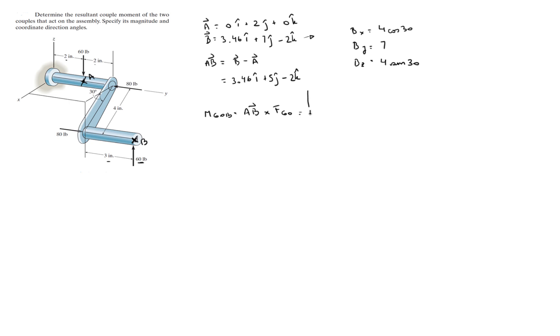So we're going to build a matrix: I, J, K. On the second row, because the first row is IJK, is going to go AB, which is 3.46, 5, and negative 2. And the 60, we're using the second one because we're going from A to B, so it's 0, 0, and it's going straight up on 60.